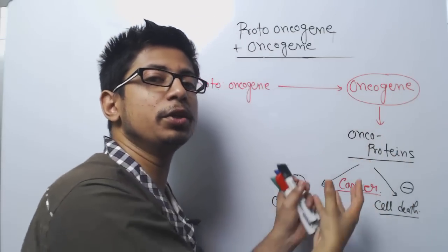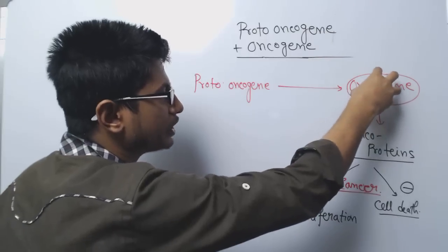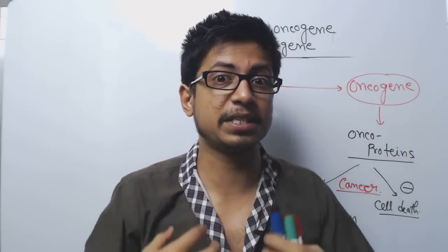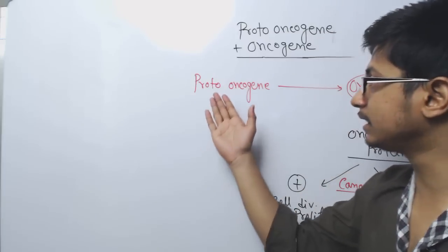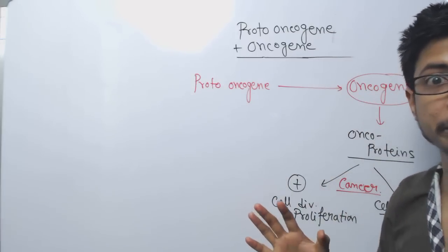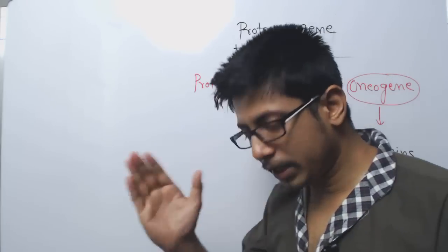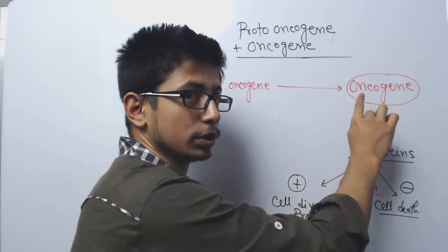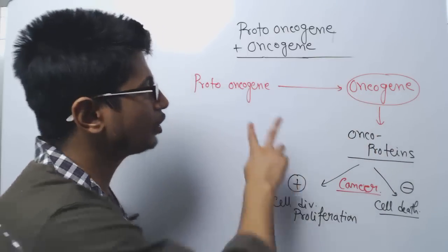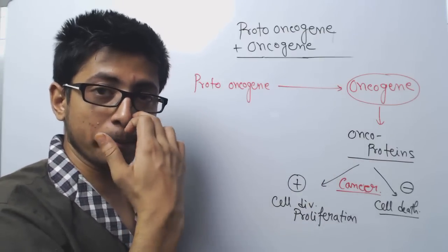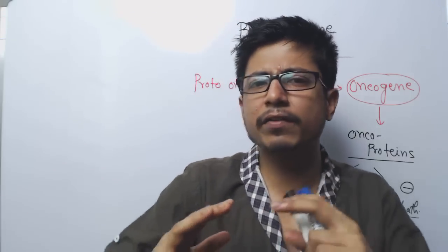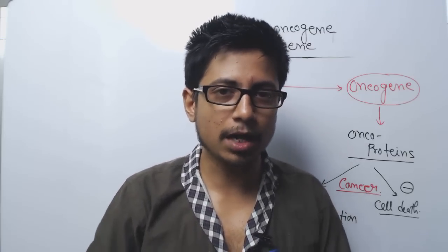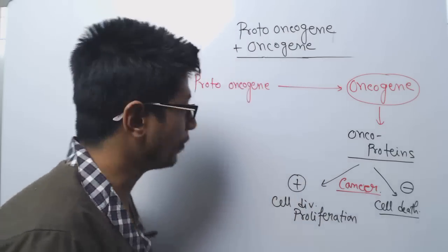The role of oncogenes is to induce cancer in the body, and oncogenes are produced from proto-oncogenes. The whole idea of cancer is that it is not a kind of infection — normal body cells start behaving badly and you cannot control them, because it is your own cells that are the issue.